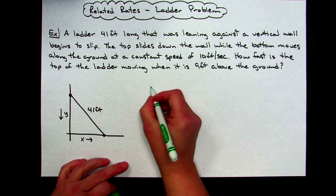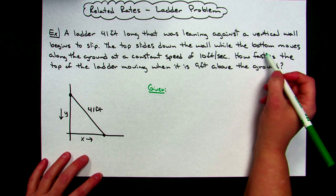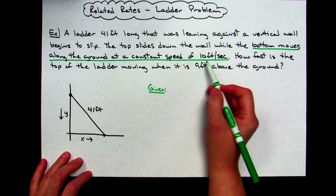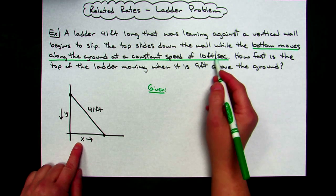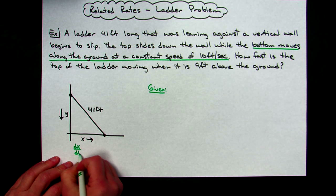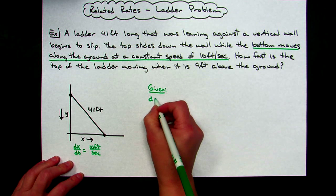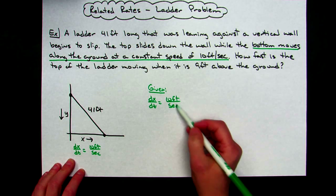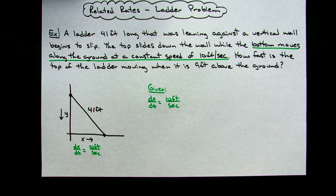Let's go back and read the story problem to figure out what our given is. The bottom moves along the ground at a constant speed of 10 feet per second. I don't want to just write down '10 feet per second' — I have to express it in terms of X with respect to time. So what I've been given is a dx/dt value of 10 feet per second. Writing the variable is really important; if you just write '10 feet per second' you'll get confused about where it fits in the triangle and what it represents.